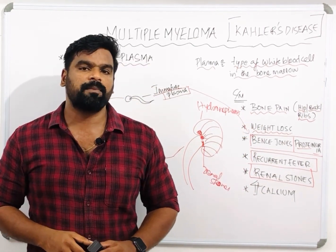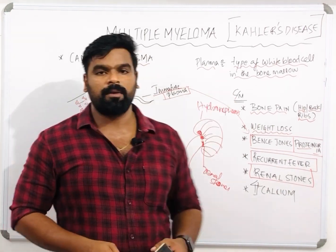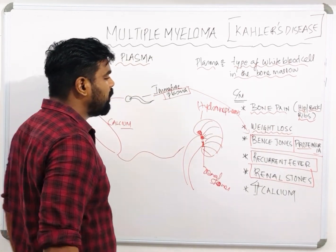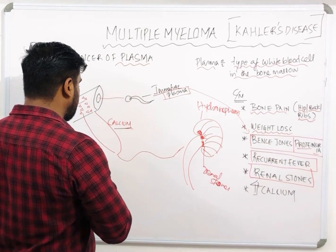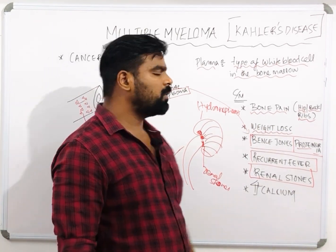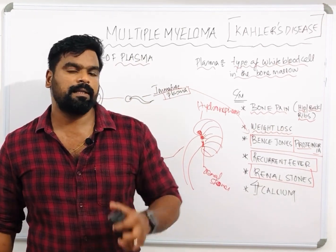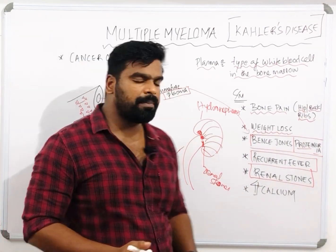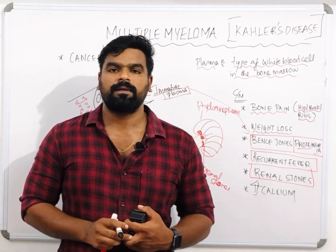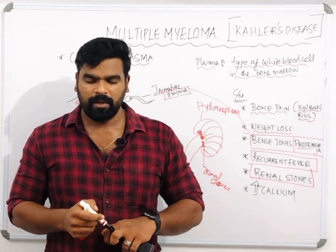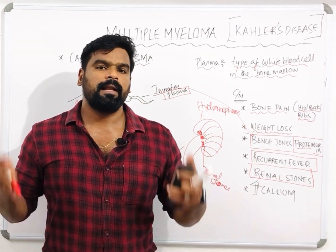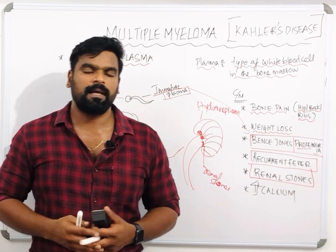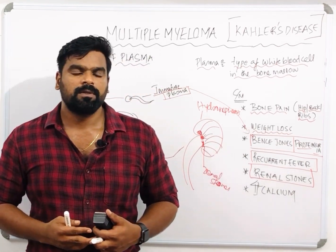Now let me discuss the management of multiple myeloma. The patient will have severe bone pain due to excessive calcium and excessive uric acid in the body. The main thing is we want to treat the hypercalcemia and hyperuricemia first. For hypercalcemia we usually use calcitonin, which is the best drug to excrete calcium from the body. And we can administer allopurinol or colchicine to excrete uric acid from the body.